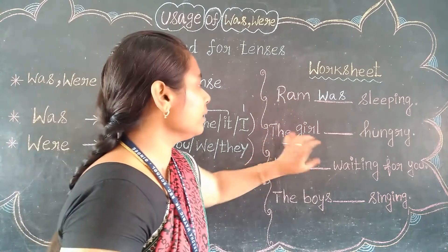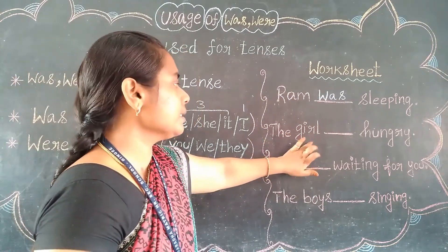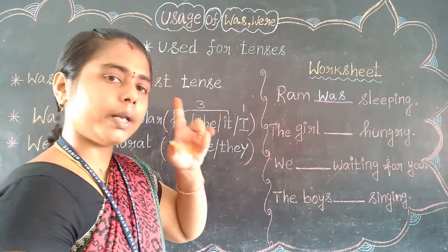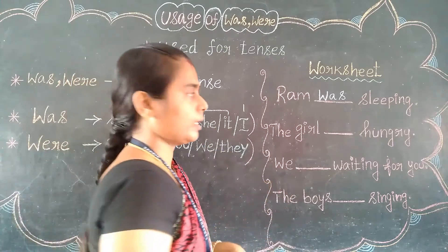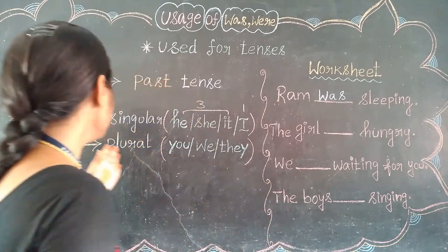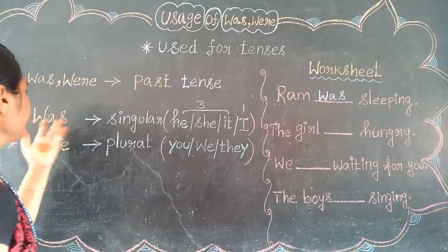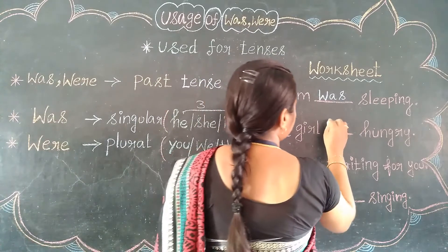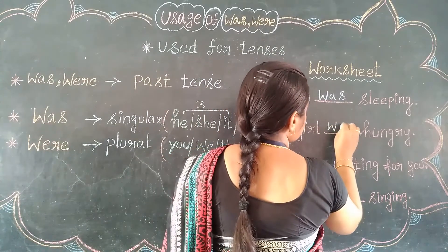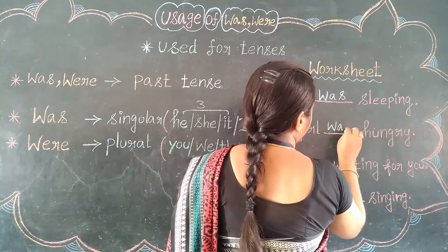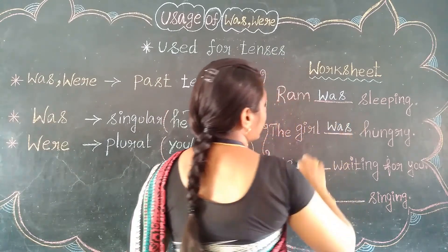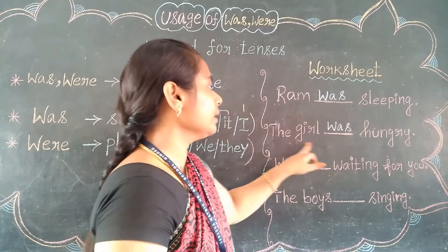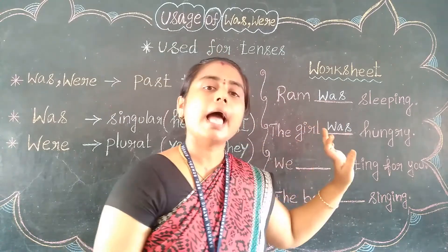Then, 'the girl.' See, 'girl' — is it singular or plural? Singular, because only one girl is there. So, singular means same thing — 'was.' Exactly 'was.' So, 'the girl was hungry.' The girl was hungry.